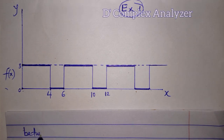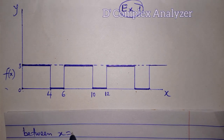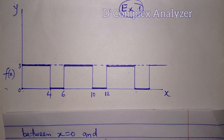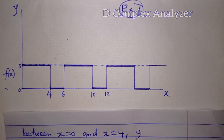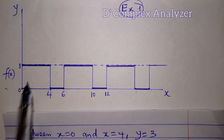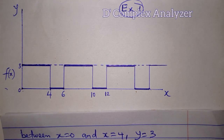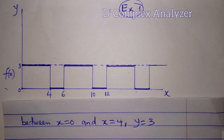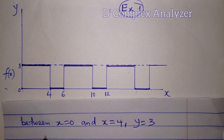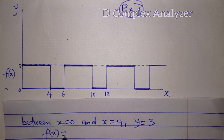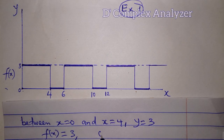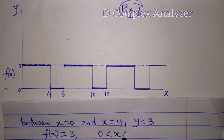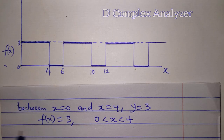Between x equal to 0 and x equal to 4, y is equal to 3. You can see it. So y is also f of x. That is to say f of x is equal to 3 in the interval 0 less than x less than 4. This is for the first line.